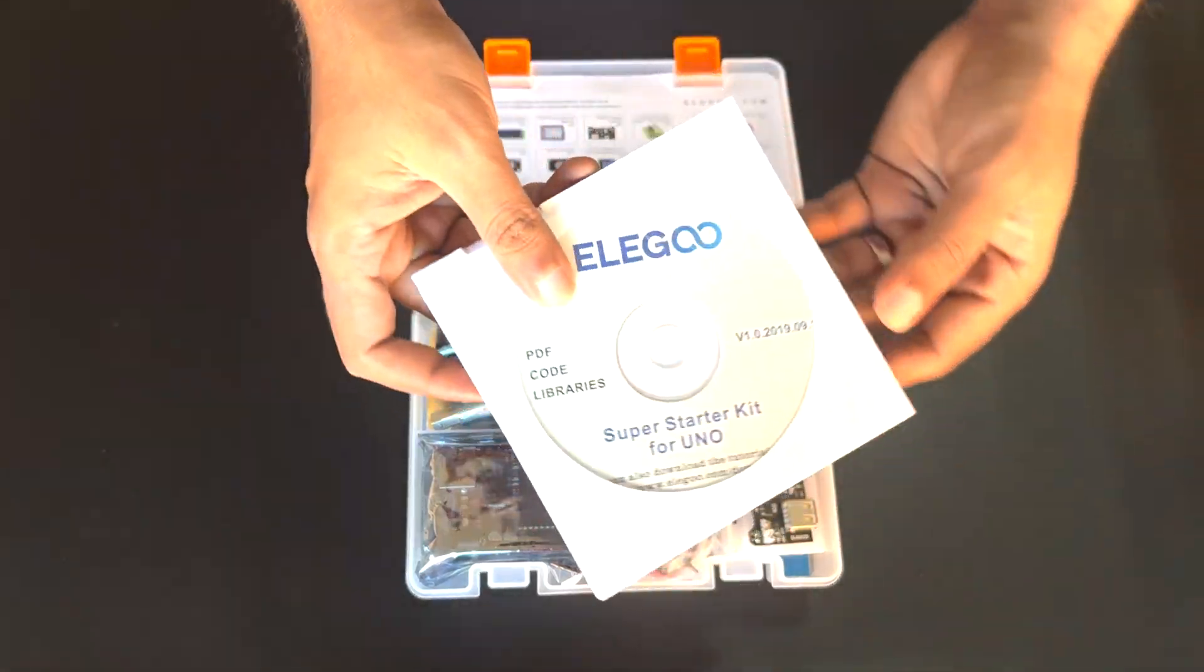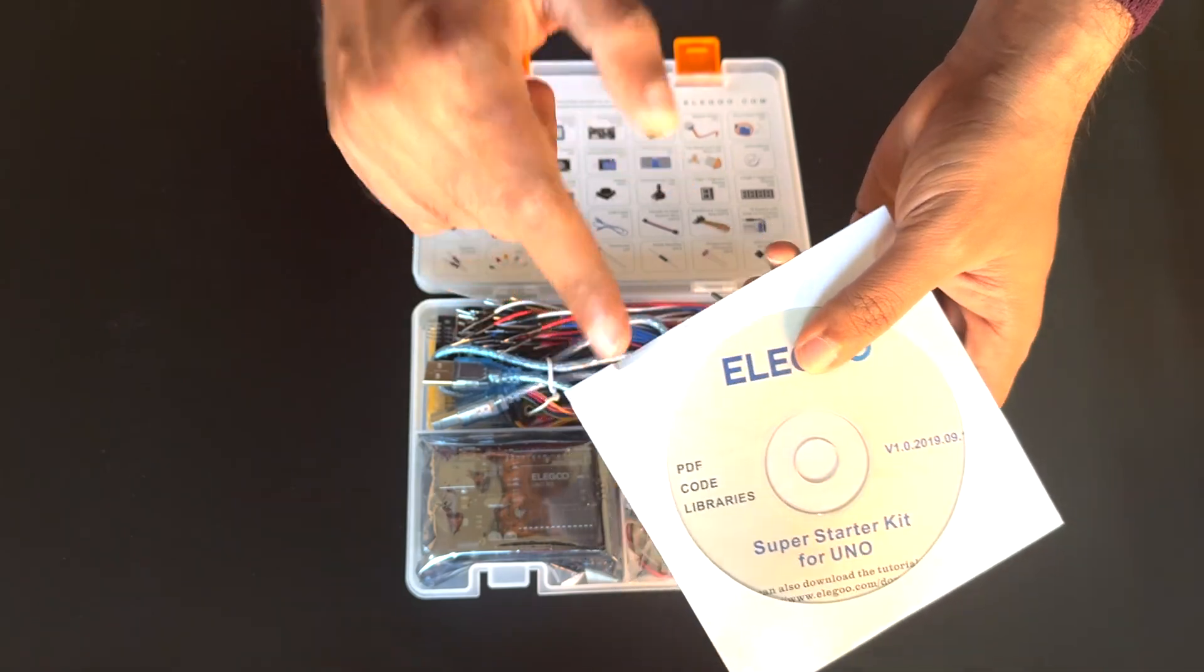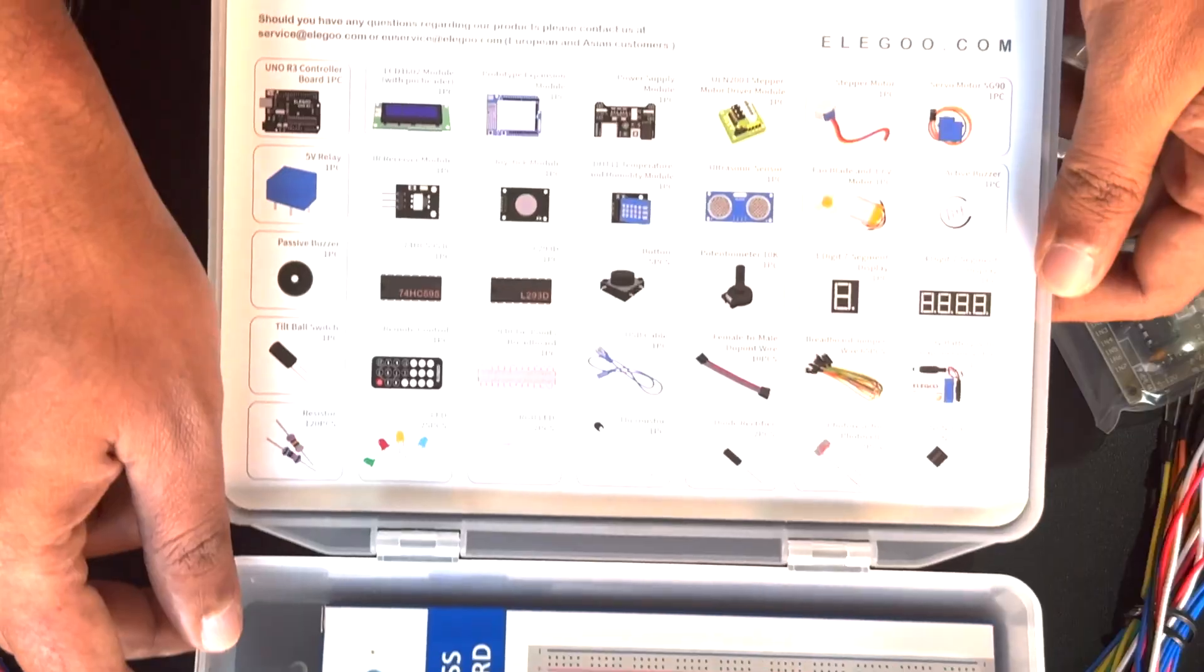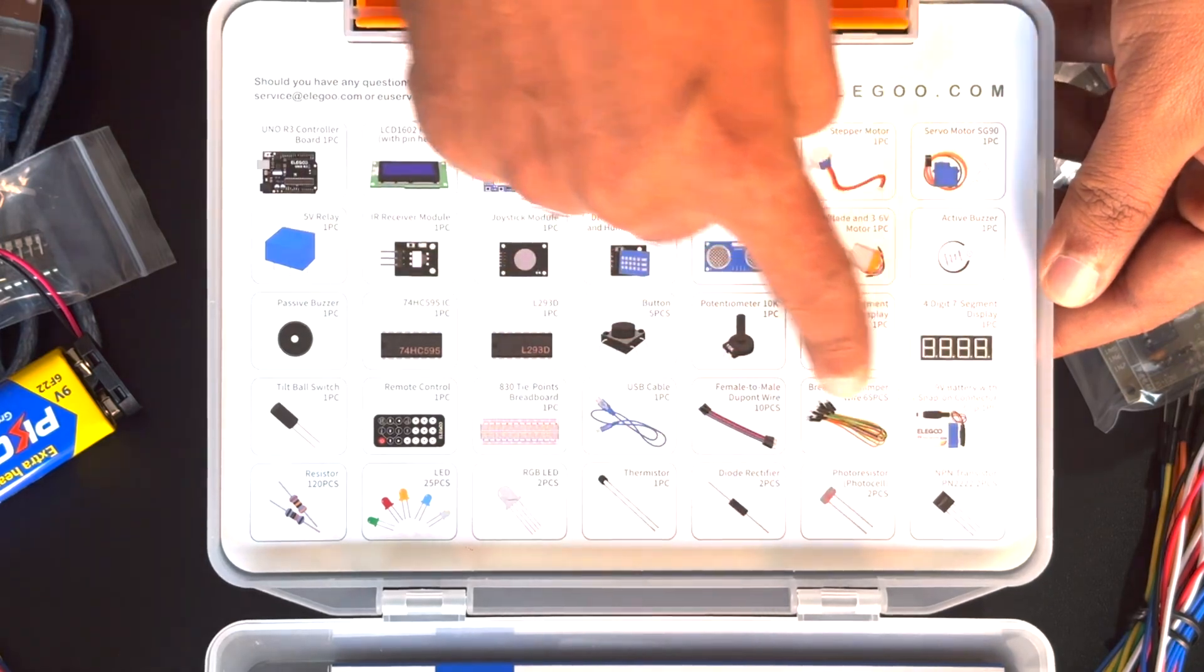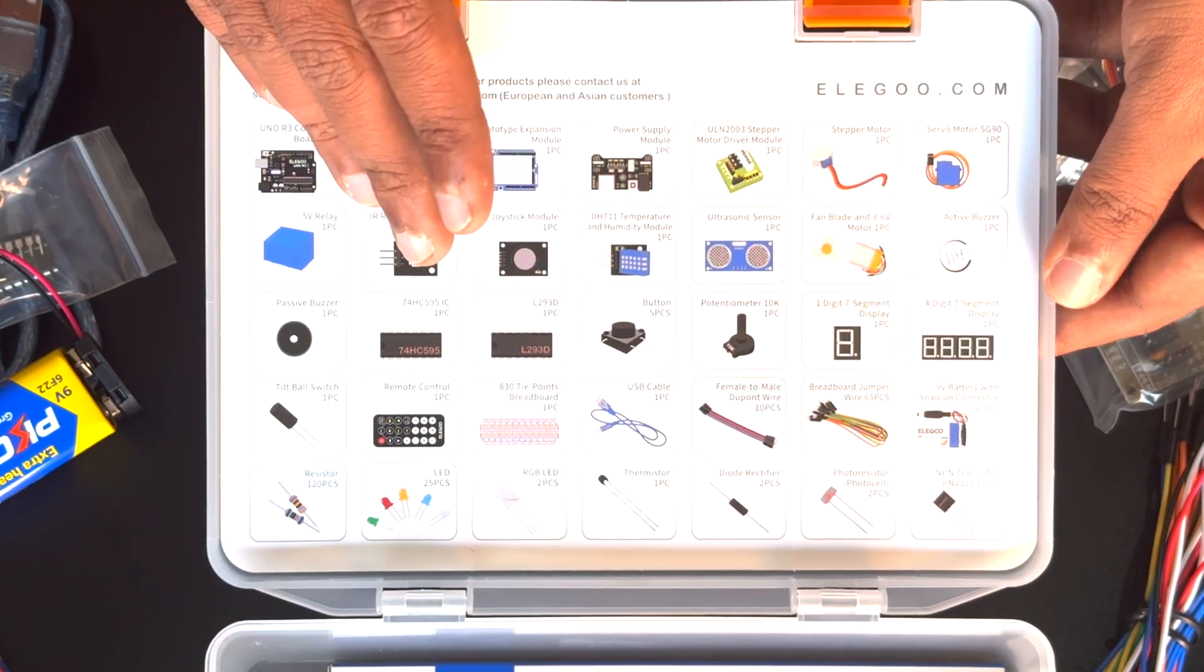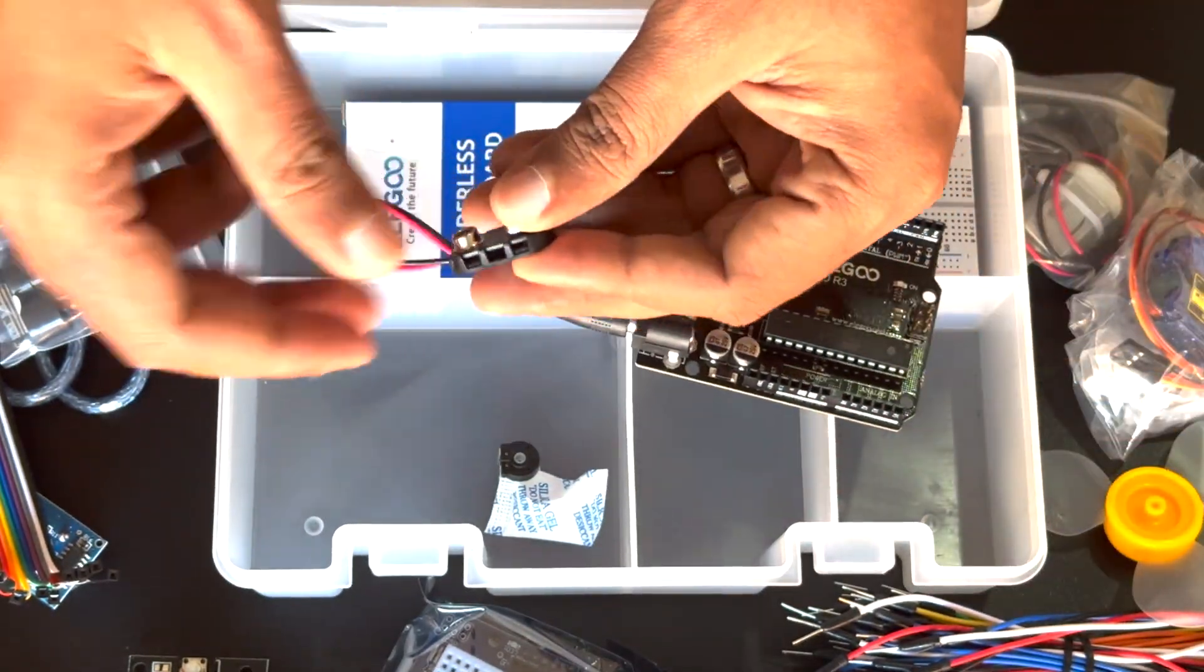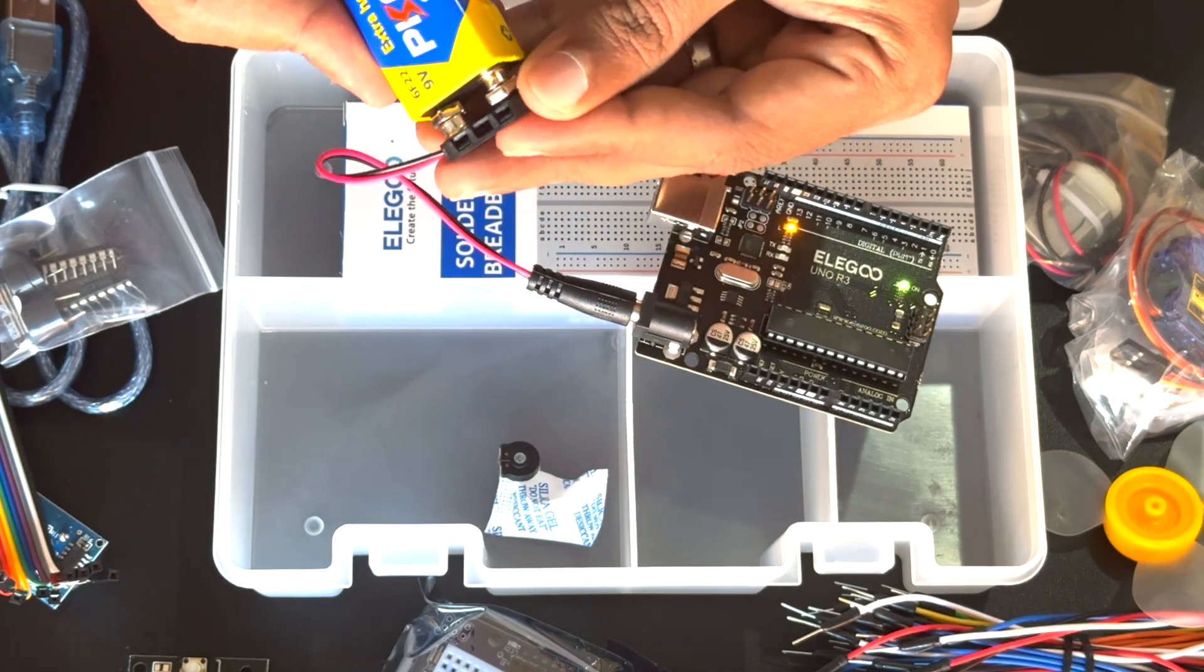One of the standout features of this kit is the comprehensive tutorial that comes along with it. With more than 22 lessons in a free PDF format, you're not just buying a bunch of components - you're actually investing in a structured learning experience. Whether you're an absolute beginner or someone with some prior knowledge, these tutorials will guide you step by step, making it easy to grasp the fundamentals of electronics and programming.